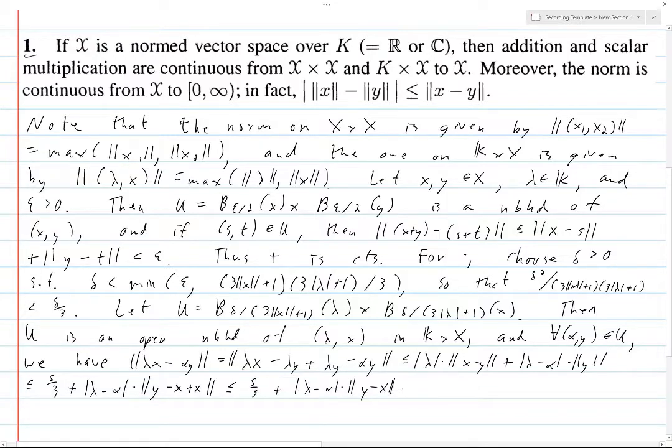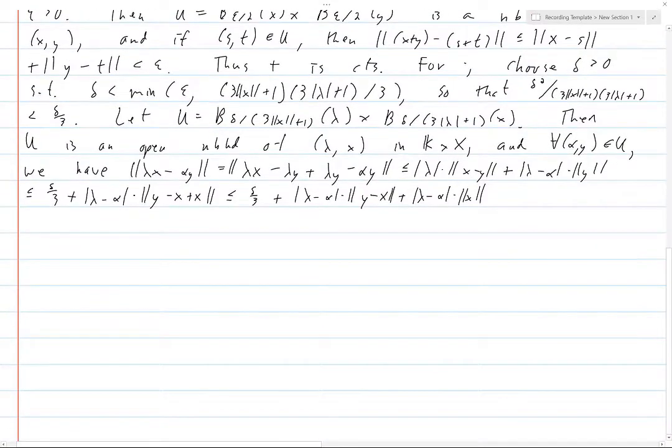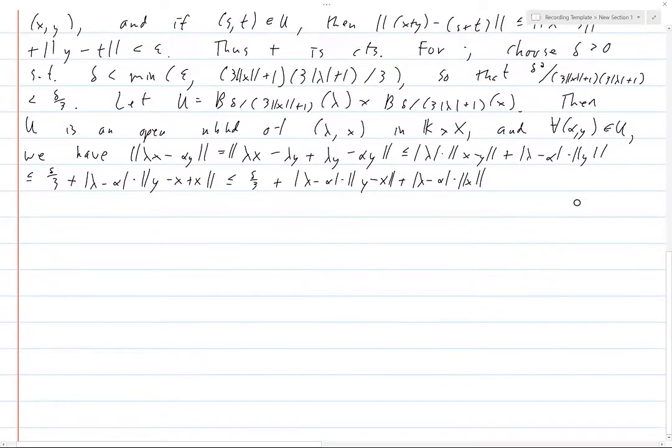y minus x plus lambda minus alpha times x. And let's see how much more space this takes. Oh, we also have to prove the reverse triangle inequality, so I'm going to need more space. I'll move it up here so that you can see the multiplication argument.